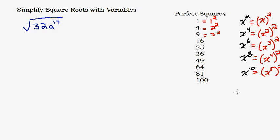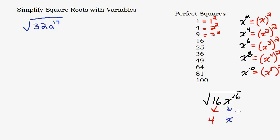This is very different from regular numbers. The number 8 is not a perfect square because it's not in our list, but X to the eighth IS a perfect square. So for something like the square root of 16x to the sixteenth: the square root of 16 is 4, and the square root of x to the sixteenth is x to the eighth.